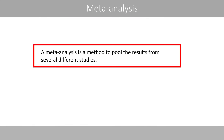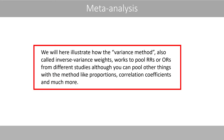A meta-analysis is a method to pool the results from several different studies. We will illustrate how the inverse variance method, also called inverse variance weights, works to pool the relative risks or odds ratios from different studies, although you can pool other things with the method, like proportions, correlation coefficients, and much more.